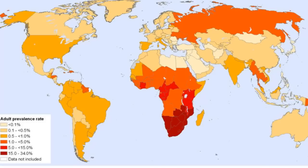Why would Africa have such a high prevalence, and only in certain areas? We could implicate cultural differences, but then why is there such a gradient of infection across African nations of similar culture and population composition? If all these populations were simultaneously infected, why would such large differences be apparent?